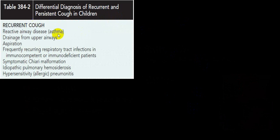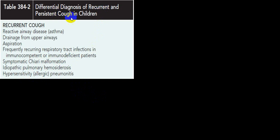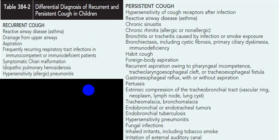Recurrent cough is a classical example in asthma. Other causes of recurrent cough include drainage from the upper airway (post-nasal drip), aspiration, recurrent respiratory tract infections particularly in immunocompromised hosts, Chiari malformation, idiopathic pulmonary hemosiderosis, and allergic or hypersensitivity pneumonitis.